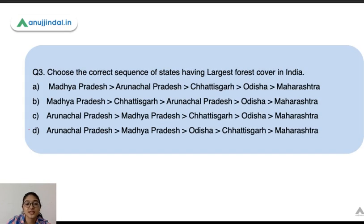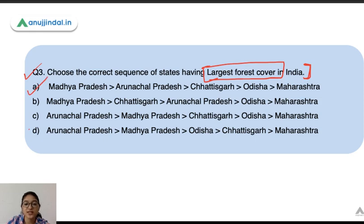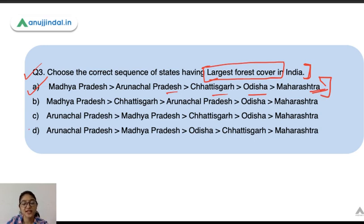Question 3: choose the correct sequence of states having the largest forest cover in India. In terms of area, the largest forest cover is in Madhya Pradesh, followed by Arunachal Pradesh, Chhattisgarh, Odisha, and Maharashtra. Note: this is area-wise. If we talk about percentage of geographical area, the sequence would be different.